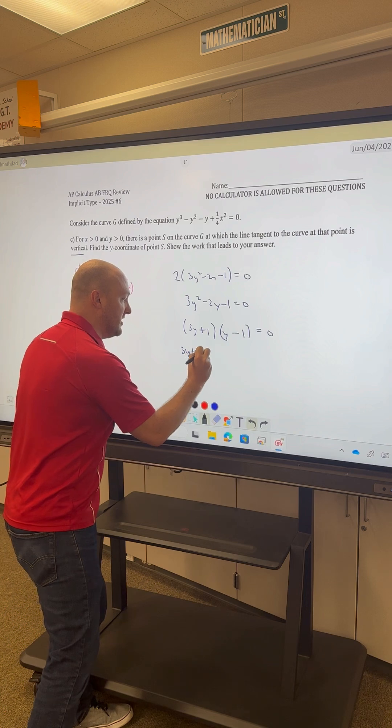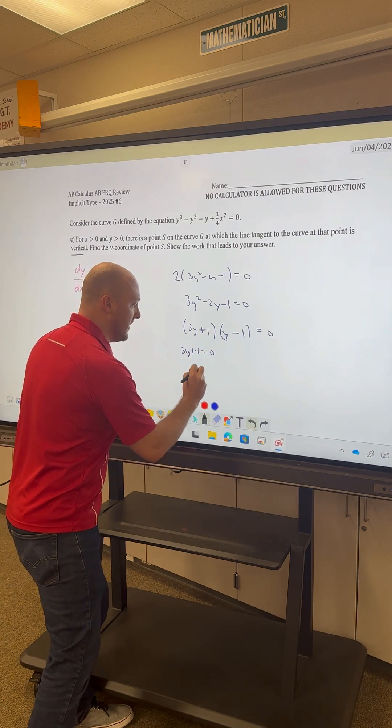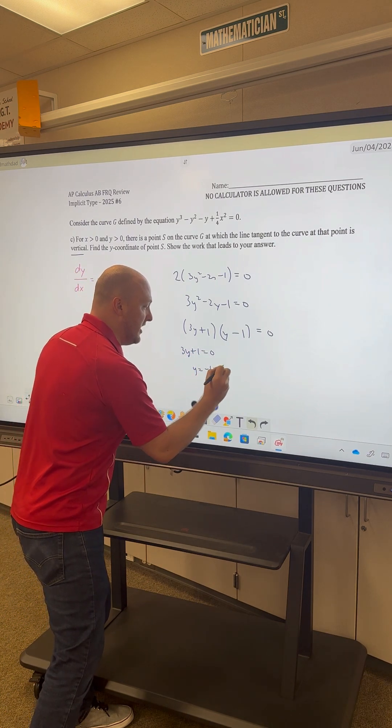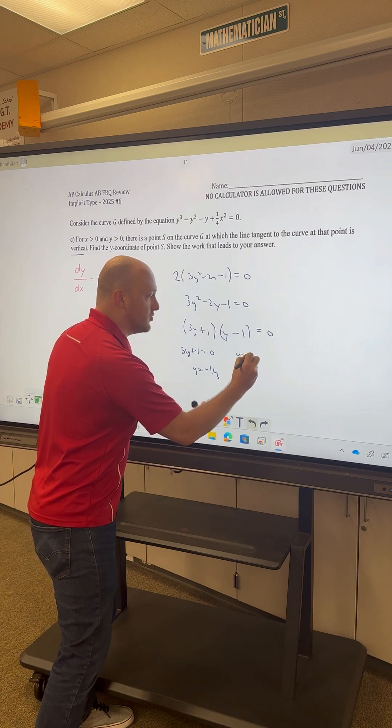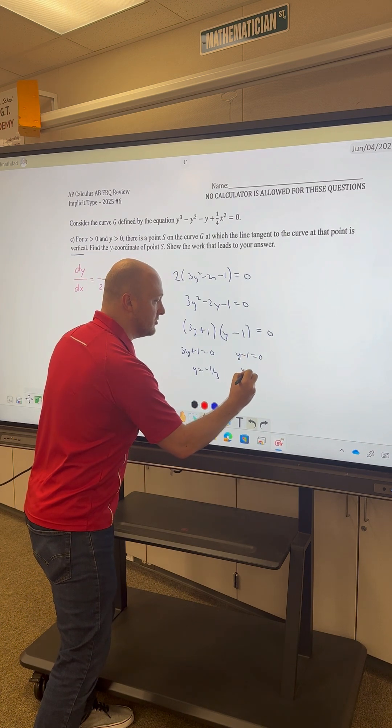We get 3y plus 1 is equal to 0, which gives us y is equal to negative 1 third. And we can set y minus 1 equal to 0, which gives us y is equal to 1.